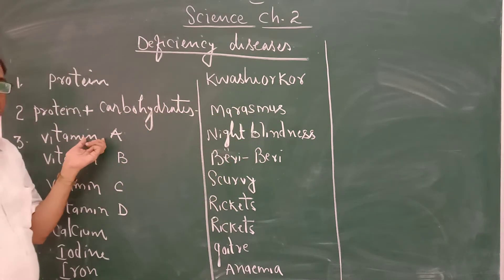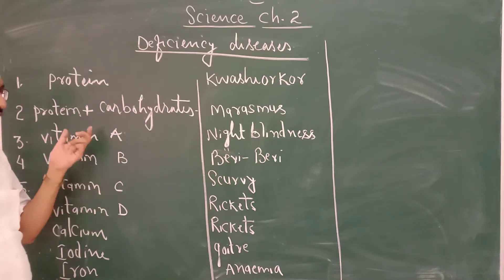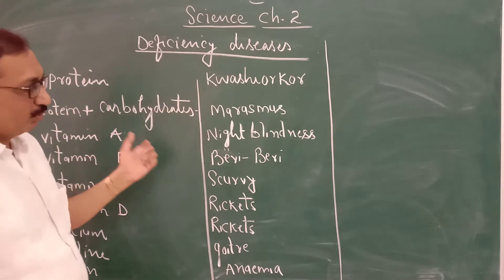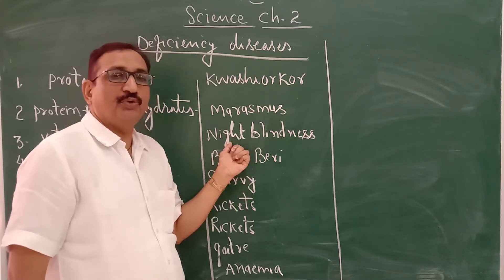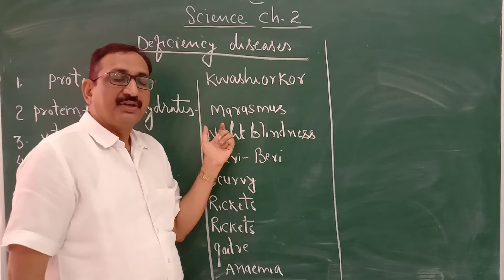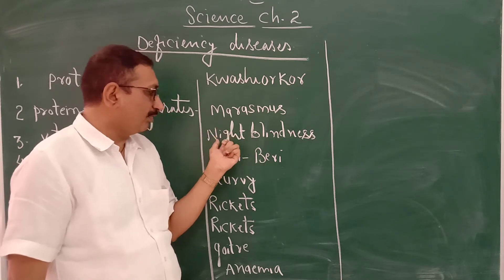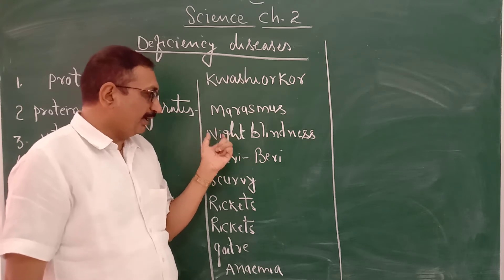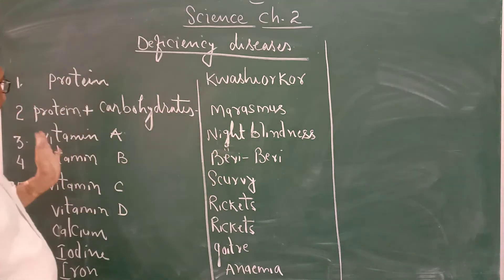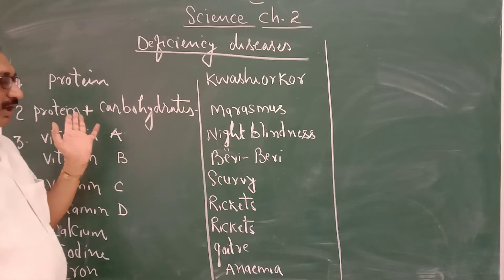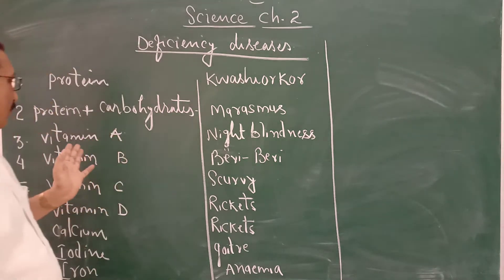Third, Vitamin A. I have explained this. Due to the shortage of Vitamin A — lack of Vitamin A — it causes a disease known as night blindness. Especially poor vision: we cannot see things clearly at night. The person suffering from this disease will not be able to see properly at night time. This disease is due to the lack of Vitamin A in the diet.